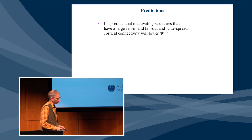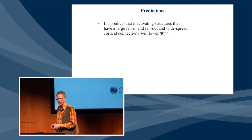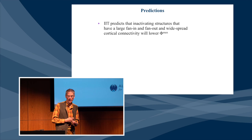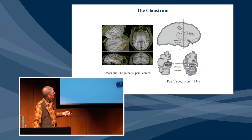Lastly, integrated information theory predicts that particular structures with a high fan-in and high fan-out will have a high phi associated with them, because such structures maximize the degree of integration and differentiation a system has. This brings me to quite a mysterious structure in the mammalian brain: the claustrum. Shown here is the last paper that Francis Crick and I wrote a few days before his death on the function of the claustrum. We hypothesize that the claustrum, because of its widespread bidirectional connectivity to and from almost all cortical regions, plays a key role in consciousness, integrating information across the entire cortical sheet. The metaphor we use is that the claustrum acts as a conductor of the cortical symphony, coordinating the distinct cortical players to produce an integrated, consciously experienced percept, memory, or thought.